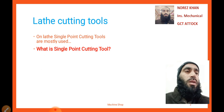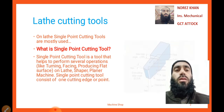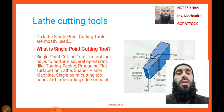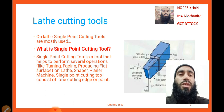What is a single point cutting tool? Here you can look at the diagram of a single point cutting tool. It is a tool that helps to perform several operations like turning, facing, and producing flat surfaces on a lathe machine, shaper machine, and planer machines. A single point cutting tool consists of one cutting edge or point.